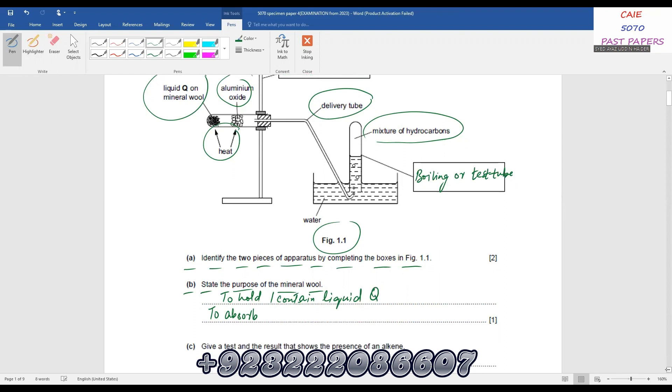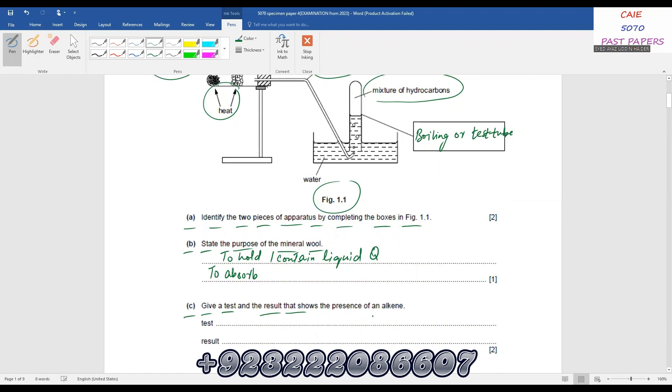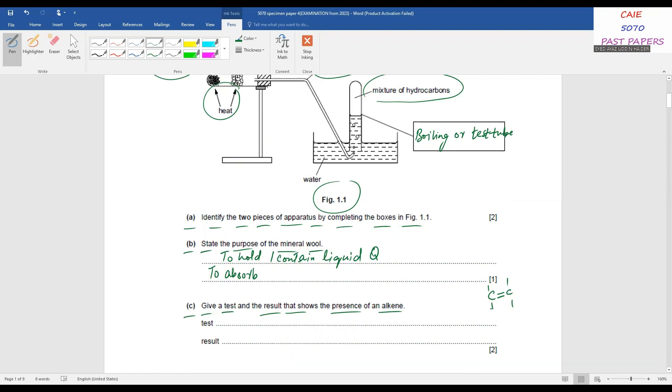Give a test and the result that shows the presence of an alkene. You know alkene contains carbon-carbon double bond, and the common test we are having in our syllabus is bromine water. You can even write bromine in cyclohexane, aqueous bromine, or bromine in cyclohexane. Result is very easy: turns from brown to colorless, turns from brown to colorless. You can even write decolorized.